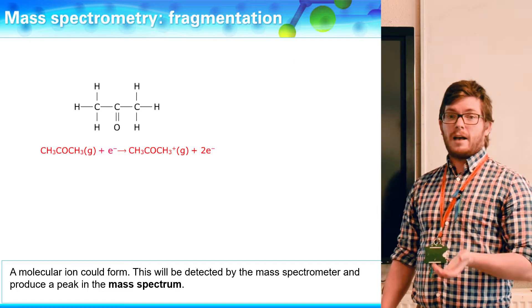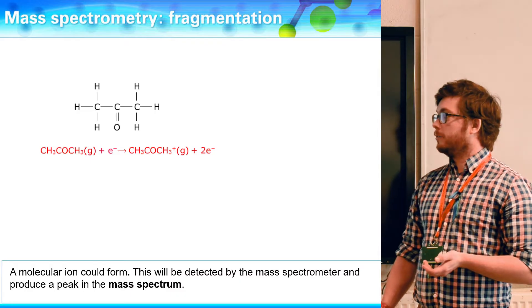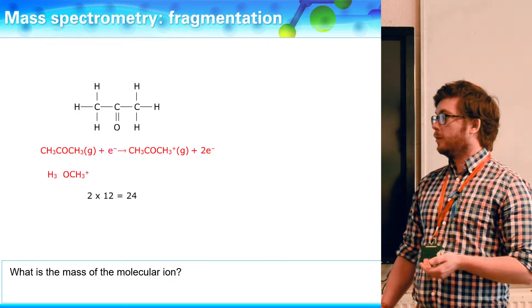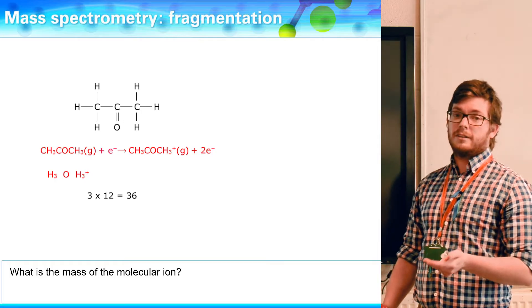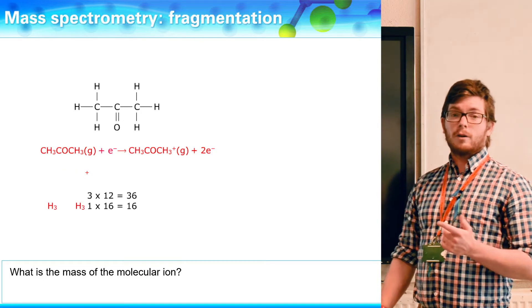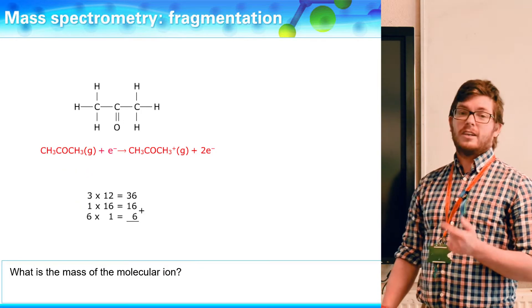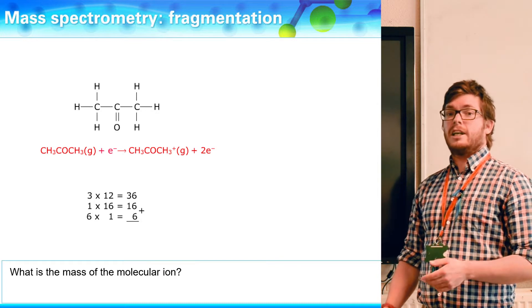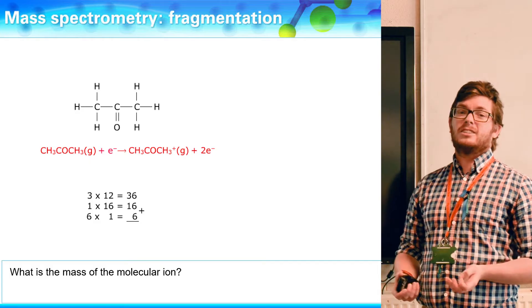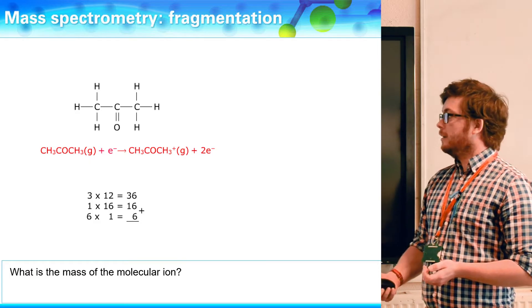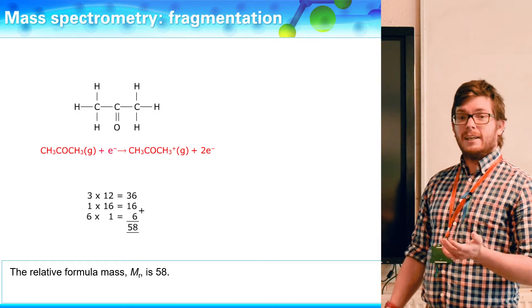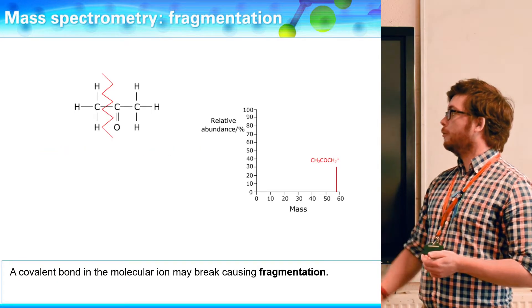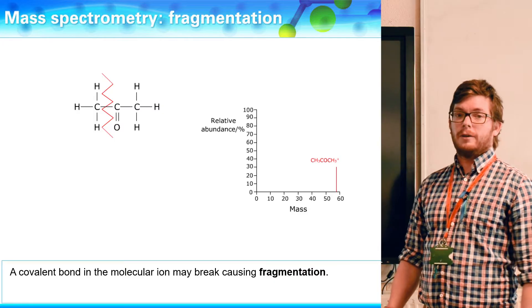Now we can work out where that molecular ion peak should be because we can just go through and calculate the molecular mass of this molecule. We can go through as we normally do and say it's got carbon, two carbons, three carbons, so there's going to be 36 adding to that. We've got one oxygen with a mass of 16 and we've got six hydrogens present with a mass of one. The mass itself isn't going to change drastically because the electron has such a small mass. So that means we should predict to see a peak at 58 and that would appear here and that is responsible for our molecular ion.